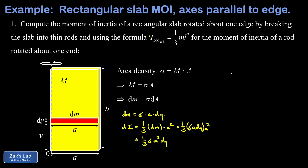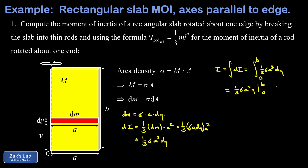Now that we have the moment of inertia contribution of a single thin rod slice, we add up all the contributions using an integral. The total moment of inertia I is the integral of dI, which is one-third sigma·a³·dy, integrating from zero to b as we go from the bottom to the top of the slab. Everything in the integrand is constant except dy, so integrating gives us one-third sigma·a³ times y evaluated from zero to b, which equals one-third sigma·a³·b.